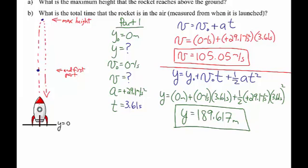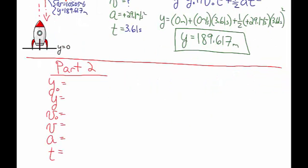As we move on to part two, that 189.617 meters is going to be the starting height. We treat this as a separate problem — it is in free fall, but we use the information calculated from the first part to fill in our initial height and initial velocity. At the beginning of part two, the height is 189.617 meters and the velocity is 105.05 meters per second. Since it's stopped burning fuel and is just in free fall, the acceleration is negative 9.8 meters per second squared.